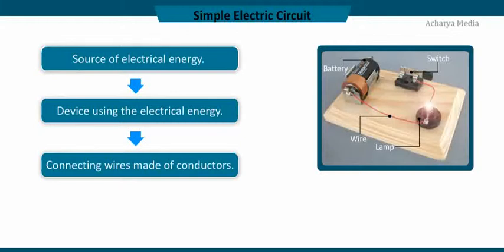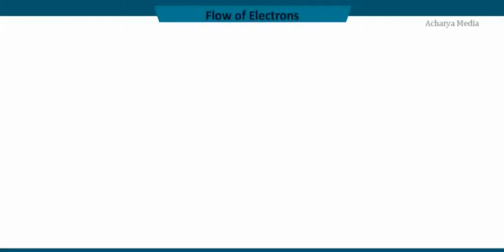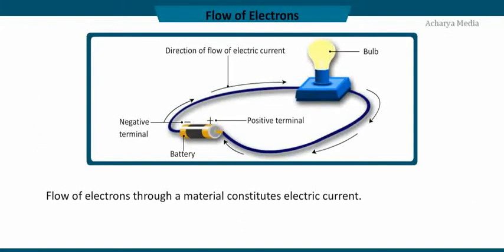The cell supplies the energy required to force electrons around the loop, heating the filament of the bulb and causing the bulb to radiate heat and light. Flow of electrons through a material constitutes electric current. A simple circuit consisting of a source of electrical energy, a device that utilizes the energy, and conducting wires connecting them is shown.